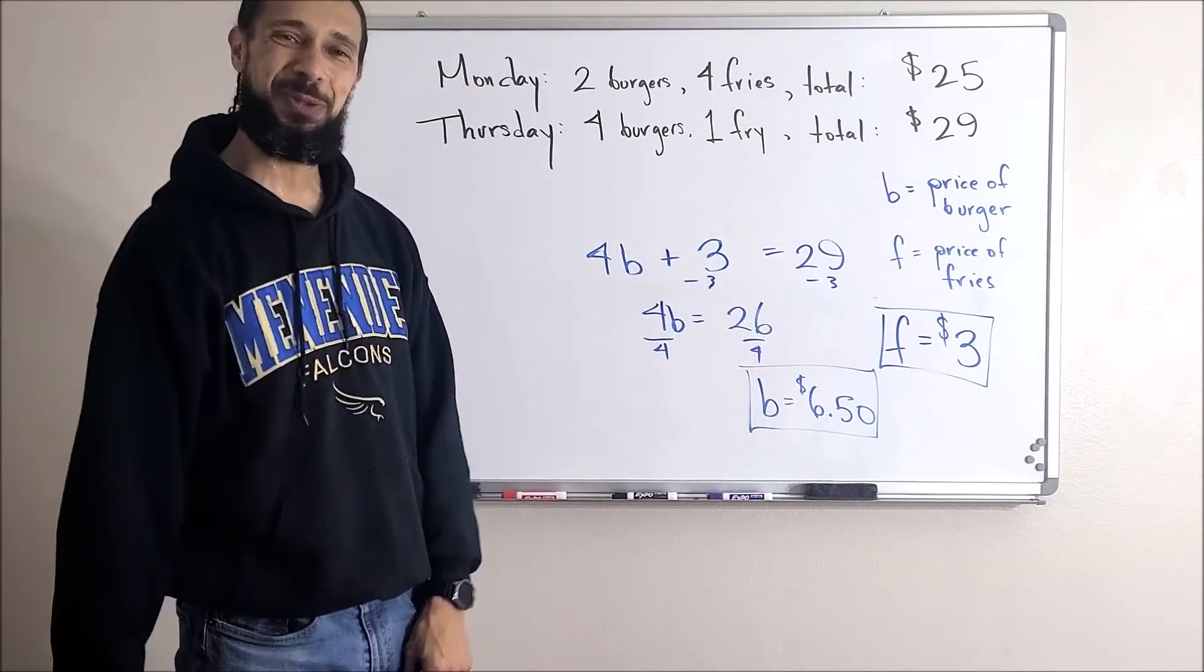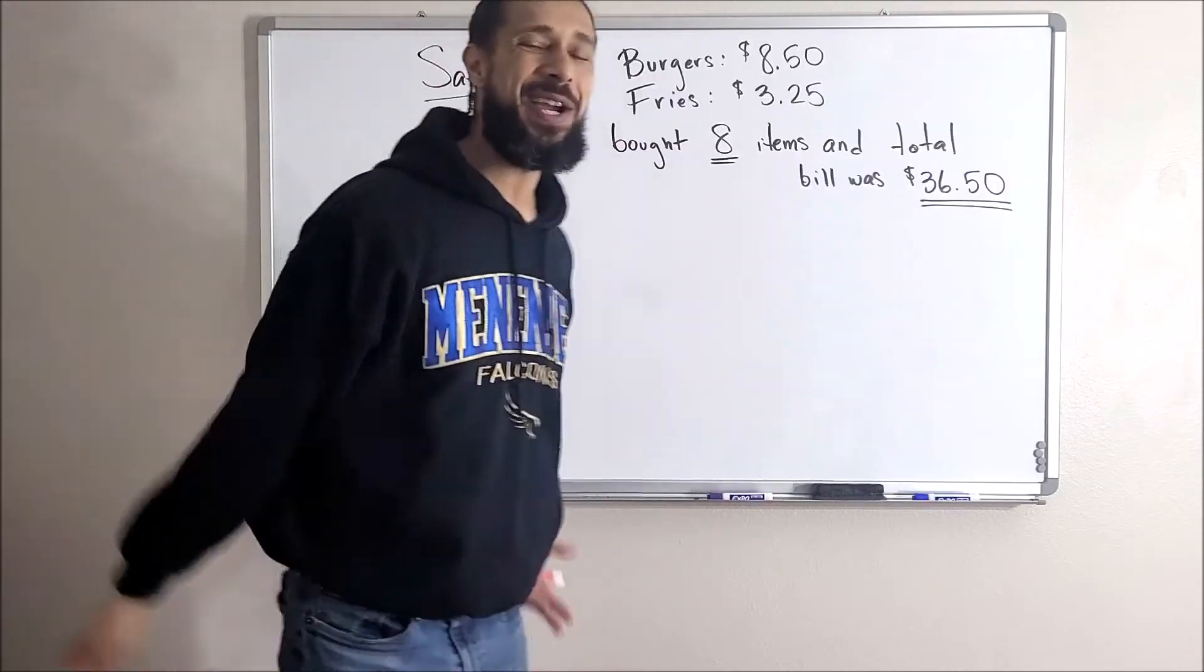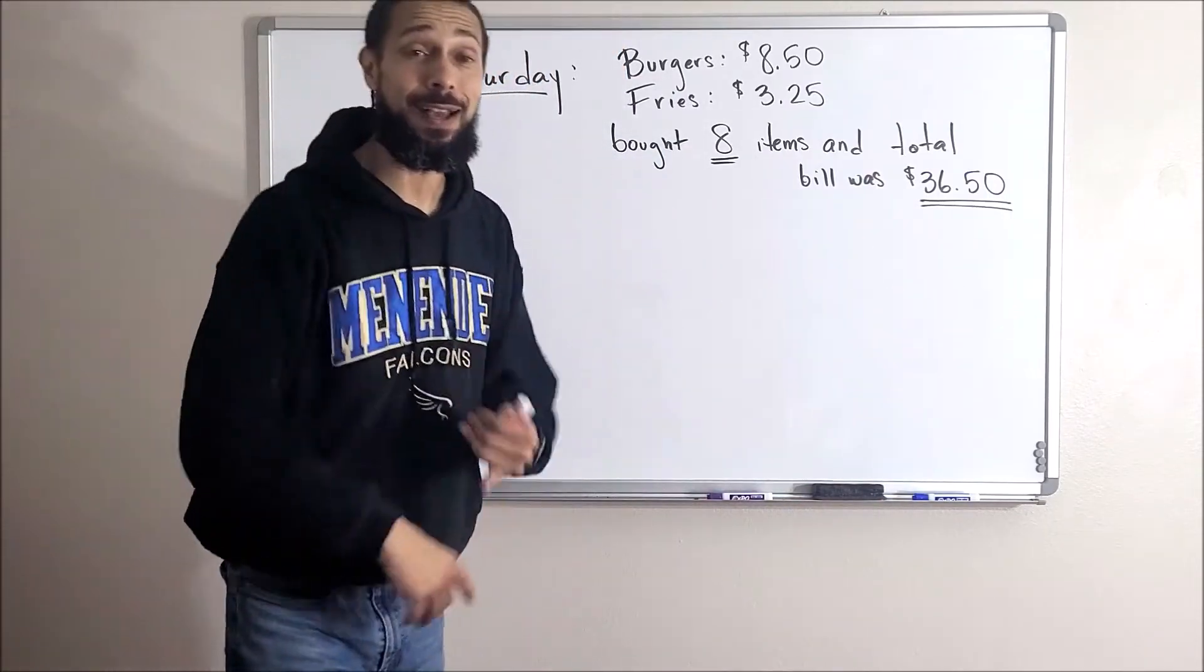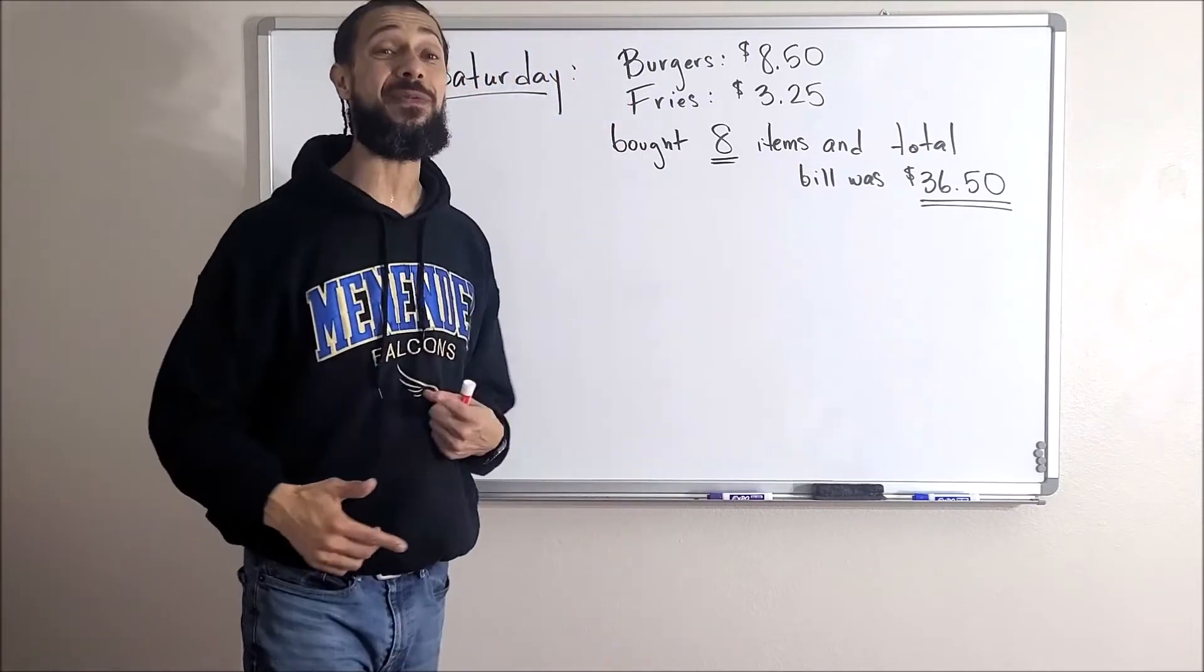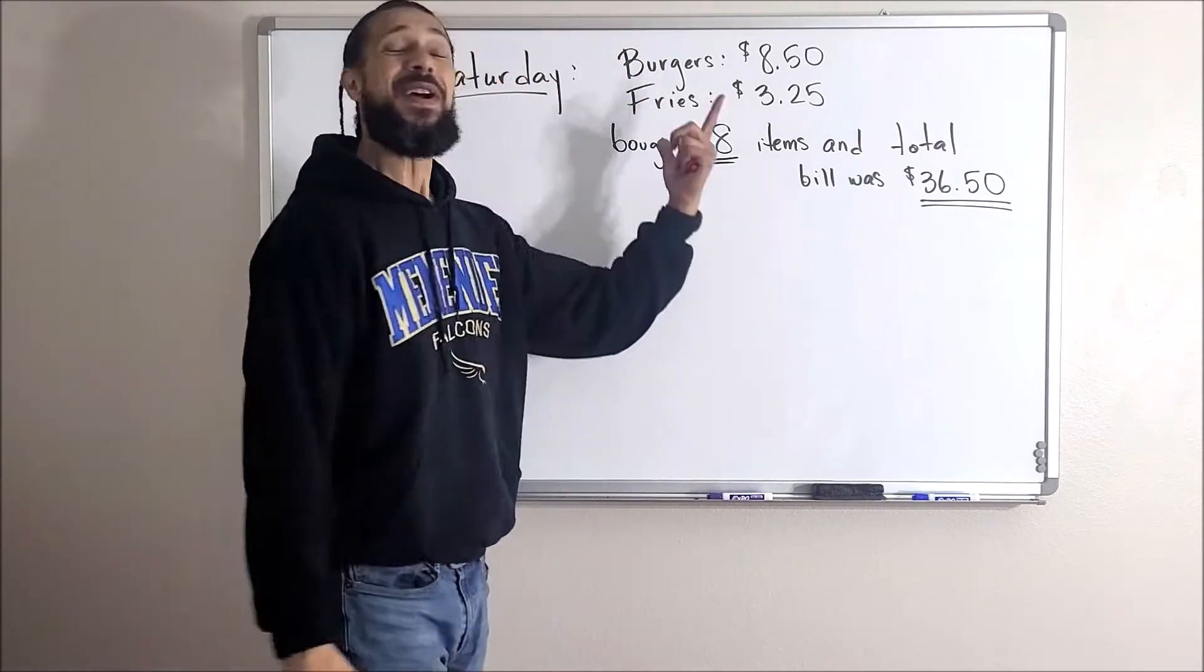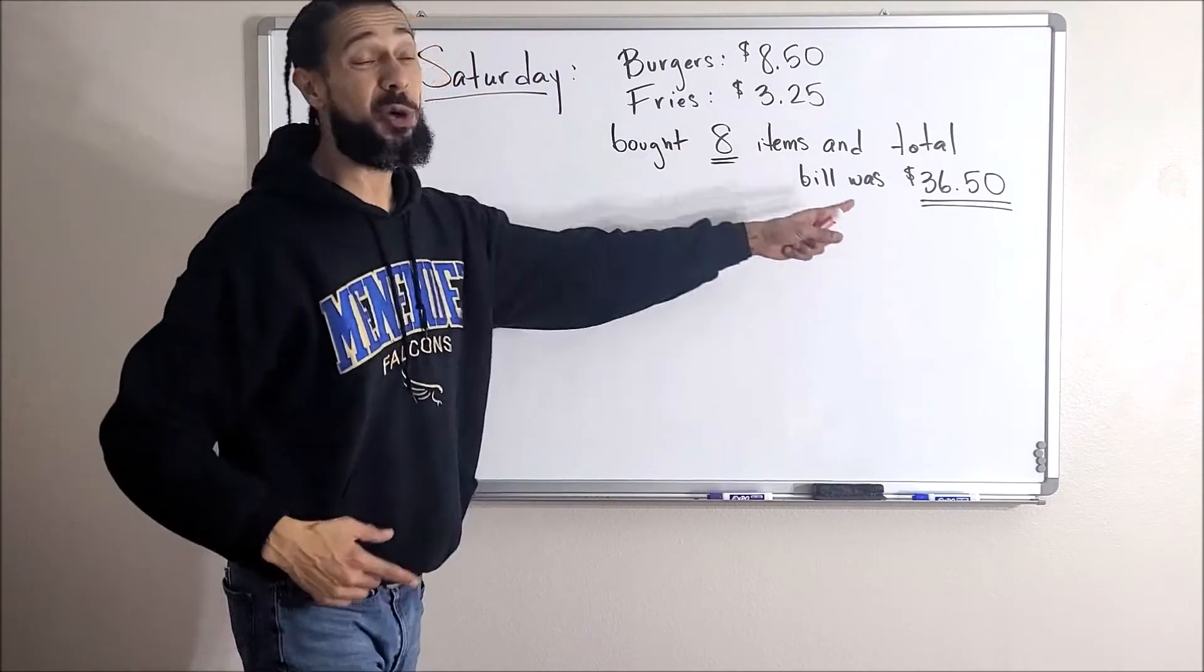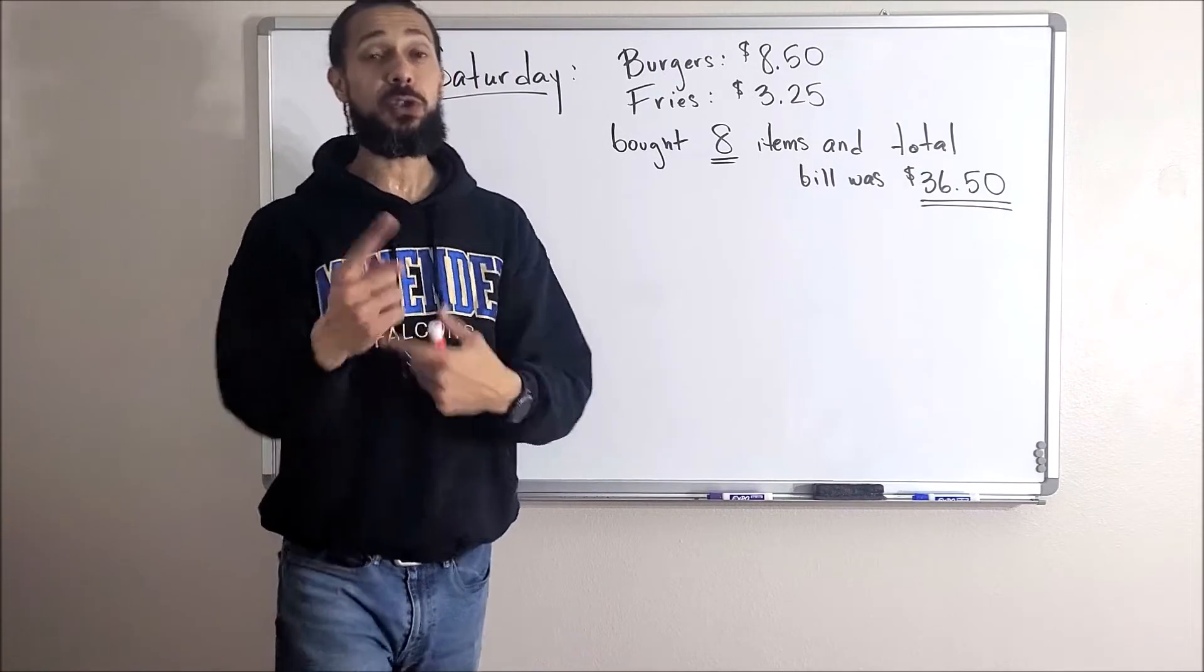Okay, here we go. Me and my family like burgers, what can I say. So on Saturday we all went out as a family. We went to a different burger place where the burgers were $8.50. It was a nice weekend, man, I wanted to take my family out and spoil them a little bit. Fries were $3.25. We bought eight items and the total bill was $36.50. Now we know how to do the money equation, right?